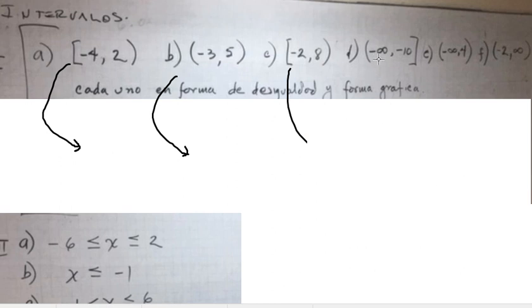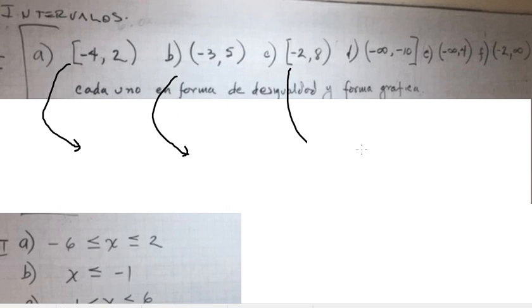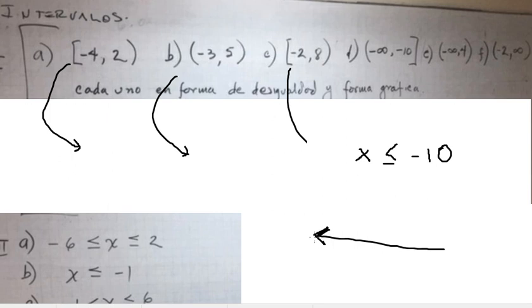Next, we have negative infinity and negative ten with the square bracket. That means s is smaller than or equal to negative ten. The figure should show an arrow going to negative infinity, and we put a black dot at negative ten.